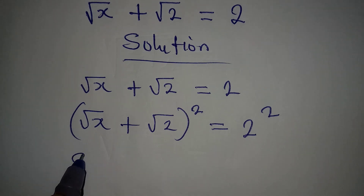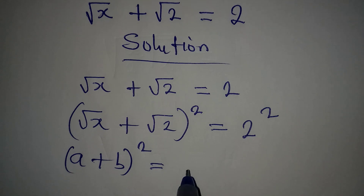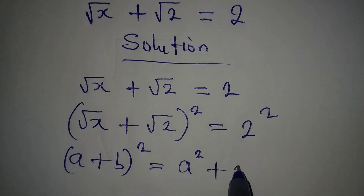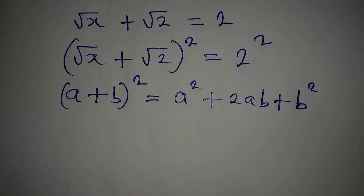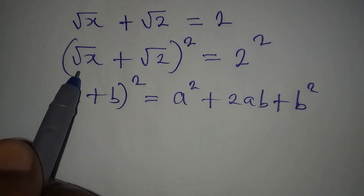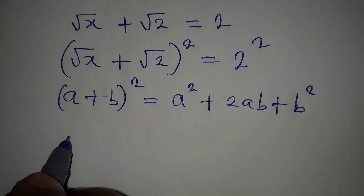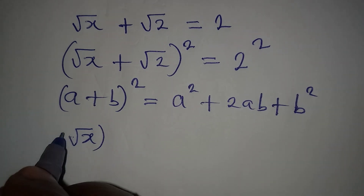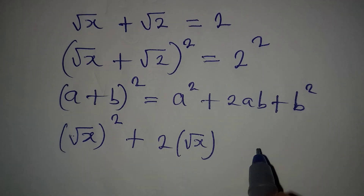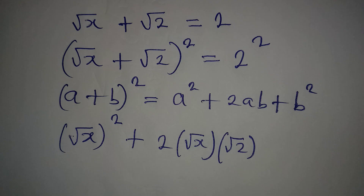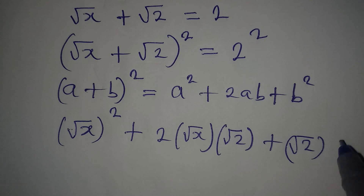I'm going to use the standard expansion: if you have (a + b)², it equals a² + 2ab + b². Here, a is √x and b is √2. So in place of a² we write (√x)², then 2ab is 2·√x·√2, and then plus (√2)².